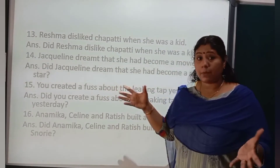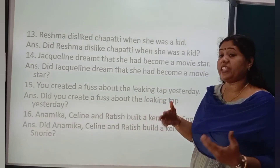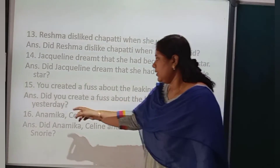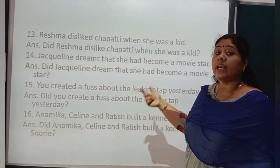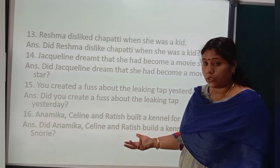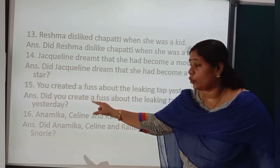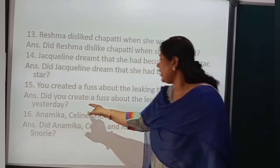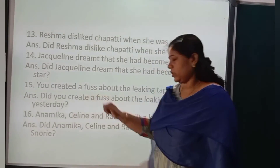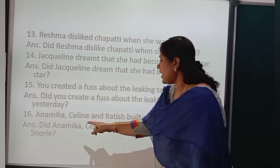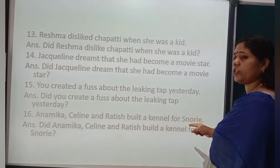Question 14: 'Kathleen dreamed that she had become a movie star' — past tense, no helping verb, use 'did': 'Did Kathleen dream that she had become a movie star?' Question 15: 'You created a fuss about the leaking tank yesterday' — 'fuss' means to create a big problem or issue. Past tense, no helping verb, use 'did': 'Did you create a fuss about the leaking tank yesterday?' Question 16: 'Anamipa, Salih and Pratish built a canal for storing' — past tense, no helping verb: 'Did Anamipa, Salih and Pratish build a canal for storing?'